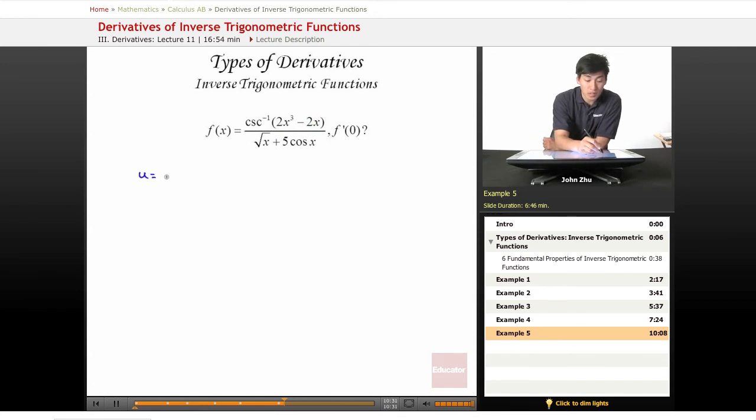U equals cosecant inverse of 2x cubed minus 2x. Well, what is du dx? Well, we have this term inside the middle, inside cosecant inverse. So we'll probably have to do another chain rule within the chain rule.